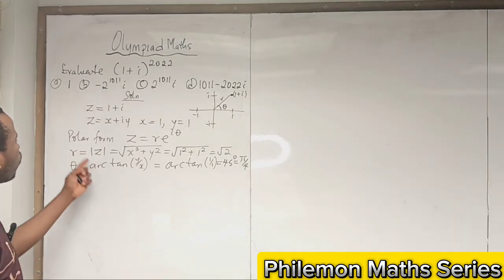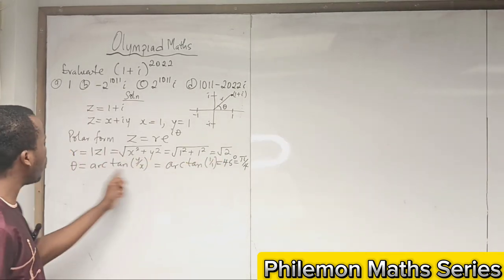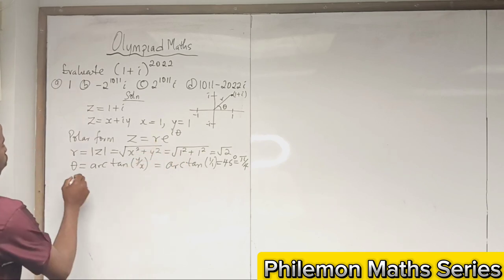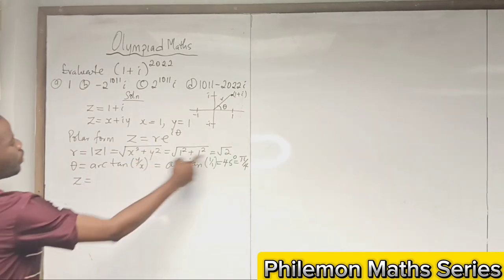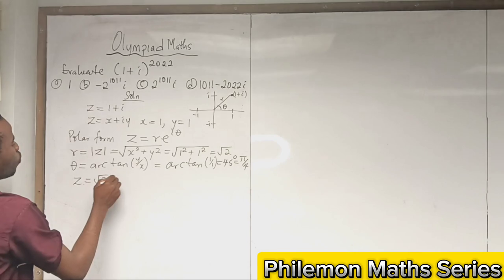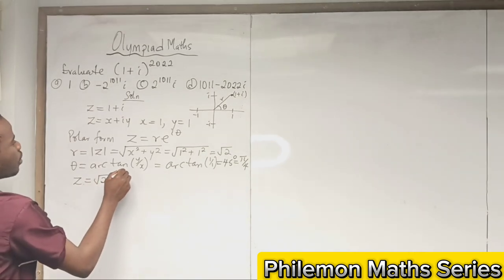Now since we have found what r is and what theta is, let's substitute. So we have z = √2 * e^(iπ/4).